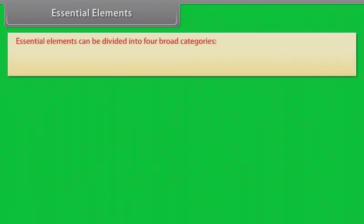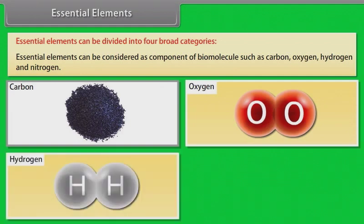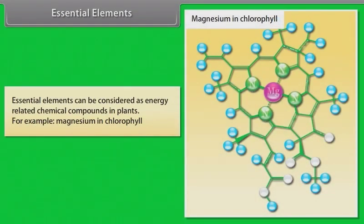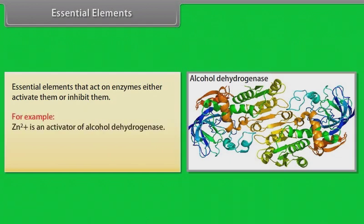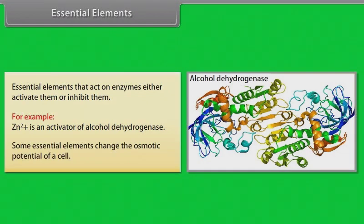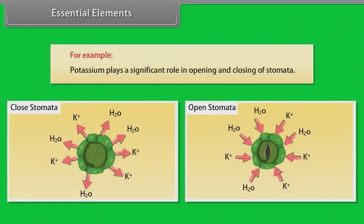Essential elements can be divided into four broad categories. First, essential elements can be considered as components of biomolecules such as carbon, oxygen, hydrogen and nitrogen. Second, essential elements can be considered as energy-related chemical compounds in plants — for example, magnesium in chlorophyll. Third, essential elements that act on enzymes, either activating or inhibiting them — for example, Zn²⁺ is an activator of alcohol dehydrogenase. Fourth, some essential elements change the osmotic potential of a cell — for example, potassium plays a significant role in opening and closing of stomata.